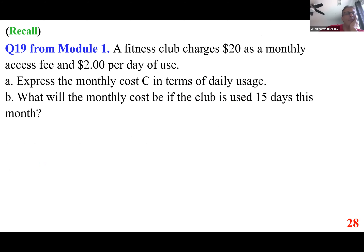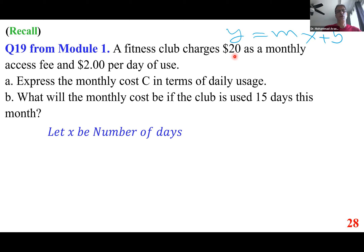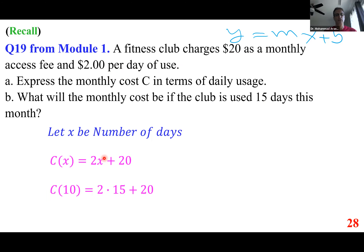A fitness club charges $20 as a monthly access fee and $2 per day. Let x represent the number of days; then y = 2x+20. After 15 days: 2(15)+20 = 30+20 = $50.